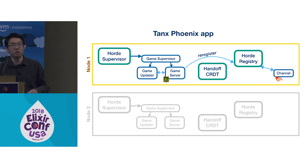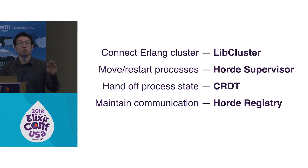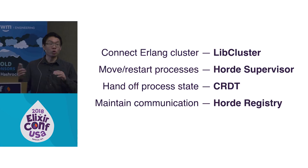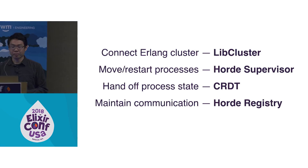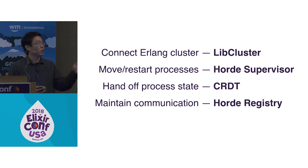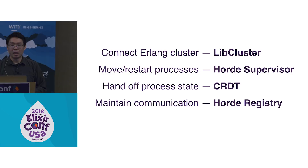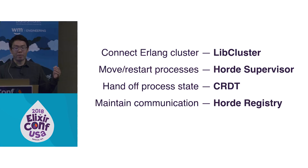To recap: we now have an app that uses OTP with long-running processes and works with container deployments — even if the container disappears and gets restarted. To do so, we solved four problems. First, we connected nodes into an Erlang cluster using LibCluster. Second, we restarted processes on new nodes using a distributed supervisor — Horde supervisor. Third, we migrated process state using a CRDT. And fourth, we maintained communication using a distributed registry — again, Horde.